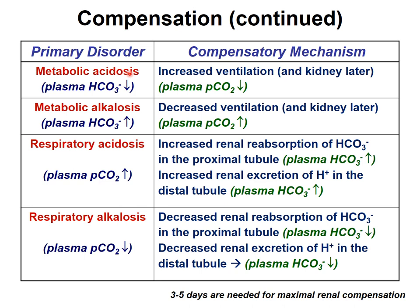Summarizing compensation: in metabolic acidosis — decreased plasma bicarbonate — the respiratory compensation is hyperventilation, which works immediately. Kidney compensation follows within two to three days, maximum five, unless the kidney is the cause of the acidosis. In metabolic alkalosis — bicarbonate accumulation — ventilation decreases, but this compensation is limited by hypoxia, and the kidney contributes subsequently.